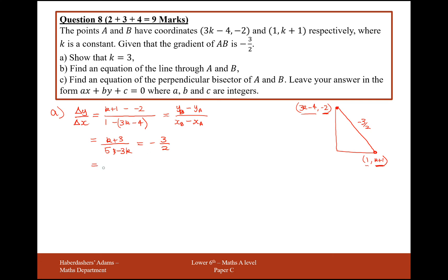Cross-multiplying, we get 2(k+3) equals minus 3(5 minus 3k). Simplifying: 2k + 6 equals minus 15 + 9k. Taking the k's over to one side gives 7k, and adding 15 to the other side gives 21, so therefore k equals 3.